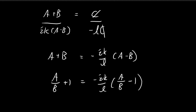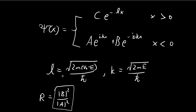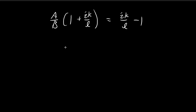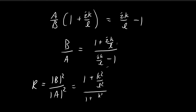Rearranging, B/A = (1 + ik/L) / (ik/L − 1). The reflection coefficient is the absolute value squared of this ratio. The modulus of the numerator (1 + ik/L) is √(1 + k²/L²), and the modulus of the denominator (ik/L − 1) is also √(1 + k²/L²). Since numerator and denominator are equal, the ratio is 1. Therefore the reflection coefficient R = 1.